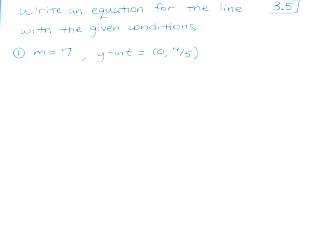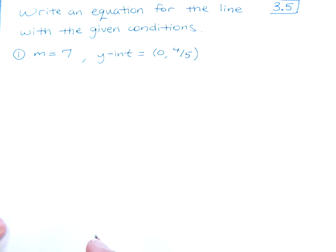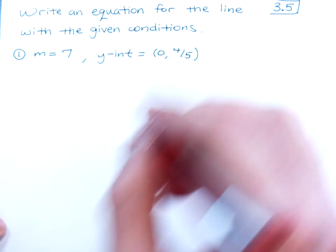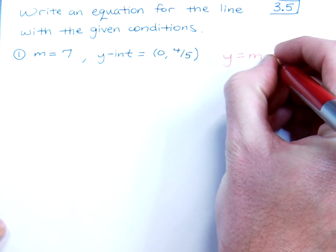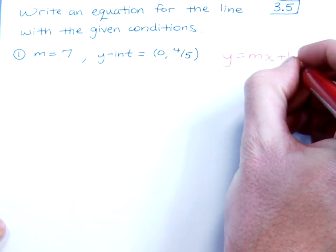Now any time that you're going to use a formula, I want you to write the formula down before you start plugging anything into it. Now for an example like this, we want to use our basic slope-intercept form, y equals mx plus b.